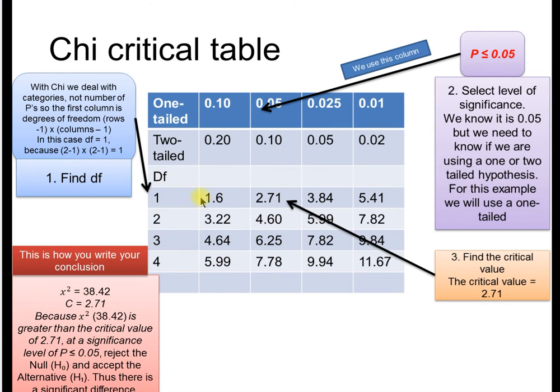This is our critical table. These are the values that the thing we've just worked out, the chi-squared, must meet or exceed, must be greater than or equal to, in order for us to say our results are significant. We know we're using a p-value of 0.05, so this is the column we're going to be looking at, because we're going to say it's a one-tailed hypothesis. Now if it was a two-tailed hypothesis, you'd be looking at this column. But it's one-tailed, so we're going to look at this column here.